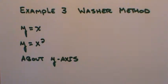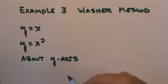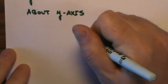Example 3 of the Washer method. In this example we're given the line y equals x, the curve y equals x squared, but they want me to go about the y-axis. So I want to first draw what I'm looking at, what I'm working with.